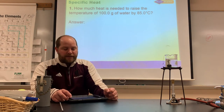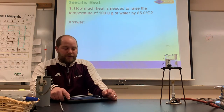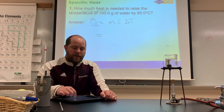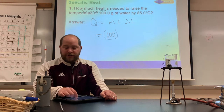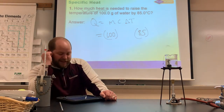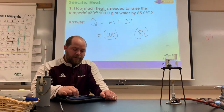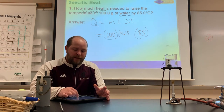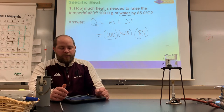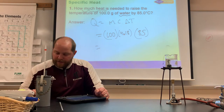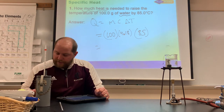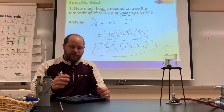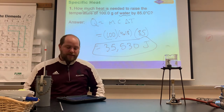Problem 2: How much heat is needed to raise the temperature of 100 grams of water by 85 degrees Celsius? Q equals mcΔT. Mass is 100 grams, ΔT is 85, and since the material is water, C is 4.18 joules per gram per degree Celsius. Q = 100 × 4.18 × 85 = 35,530 joules, or 35.530 kilojoules.